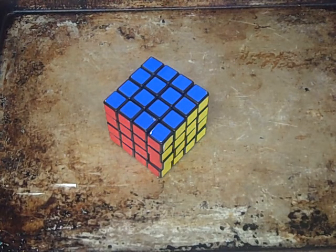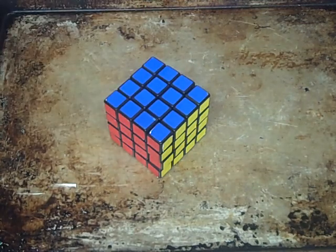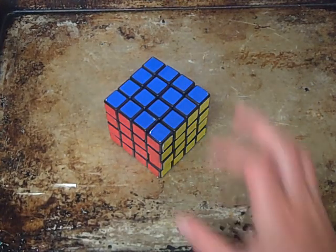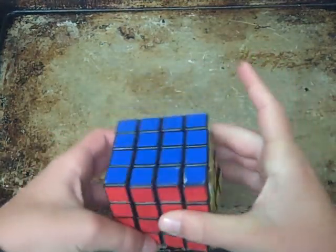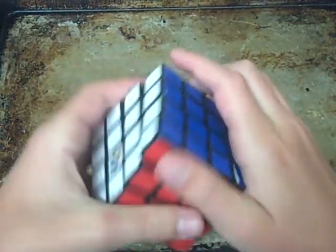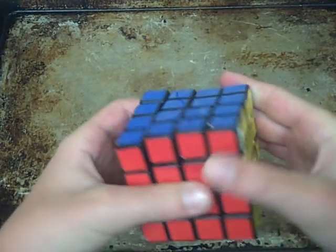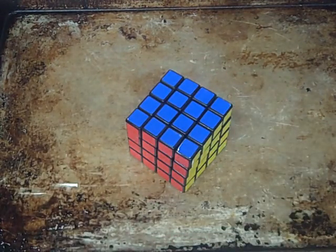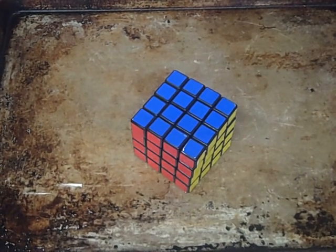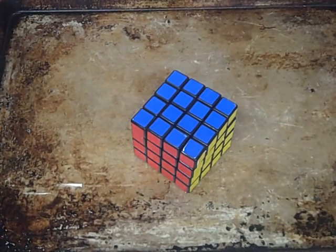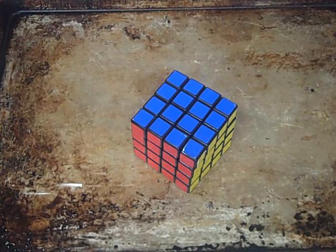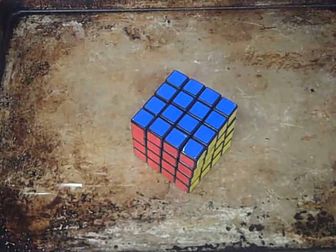So, what you need to do when solving this cube is, first, you're going to need to know the notation. The notation is pretty much the same as the 3x3, but instead of being an I for inverted, it's going to be an apostrophe or a prime symbol. That means the same thing as a lowercase i, because we're not going to use a lowercase i anymore because lowercase letters mean different things.